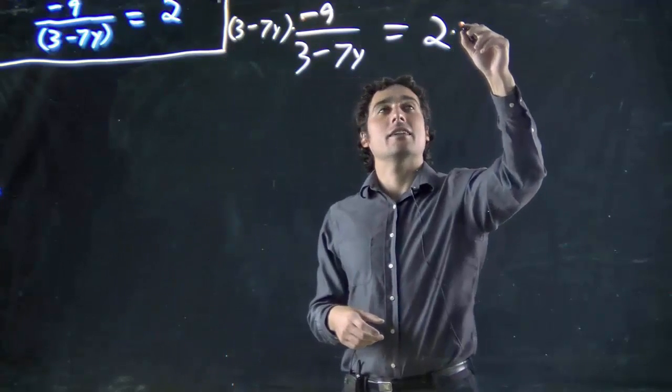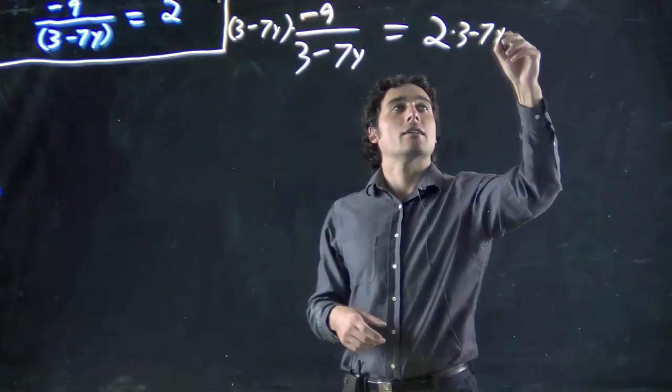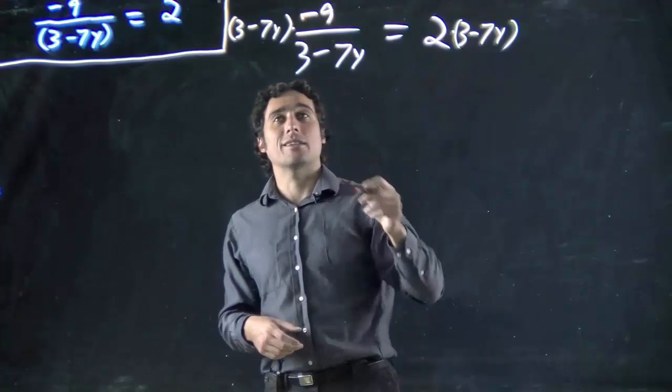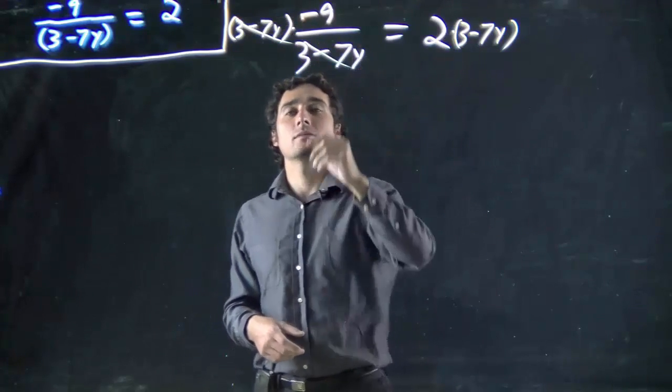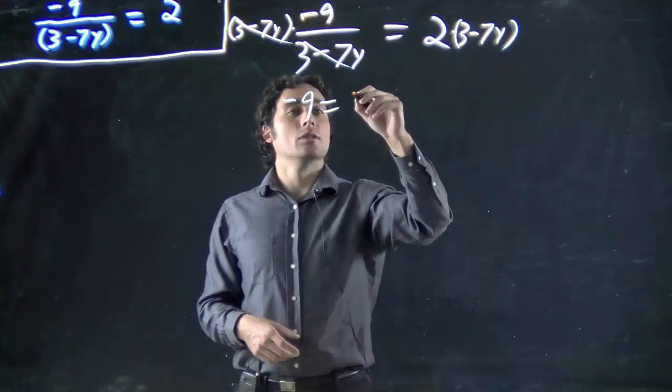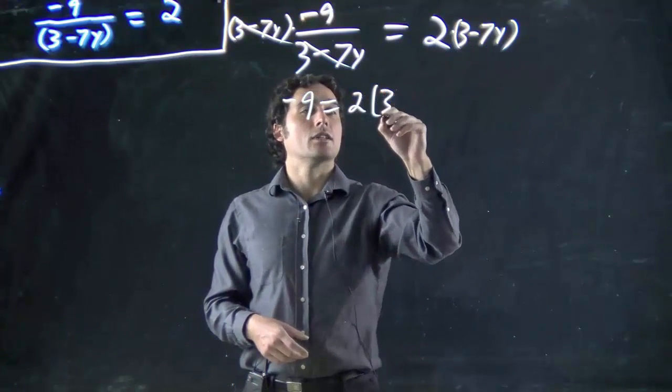But still got to do it to this side. 3 minus 7y. And this time I need a bracket because now there's something outside there. These cancel. And I get minus 9 equals 2 bracket 3 minus 7y.